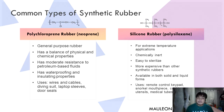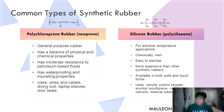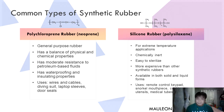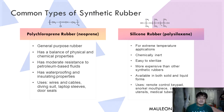Lastly, we have silicone rubber, or polysiloxane, used for extreme temperature applications. It is chemically inert and easy to sterilize, making it more expensive to produce than other synthetic rubbers. It is available in both solid and liquid forms and is commonly used in remote control keypads, snorkel mouthpieces, cooking utensils, and medical tubings.